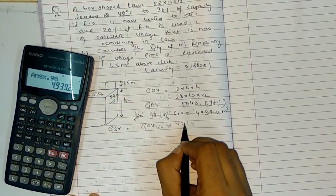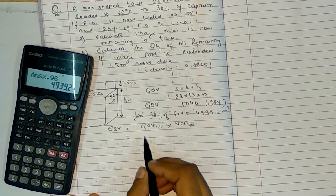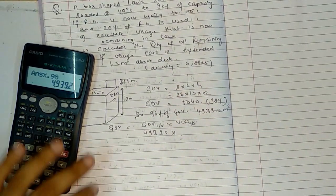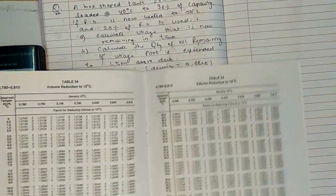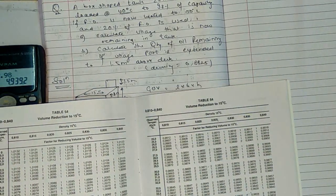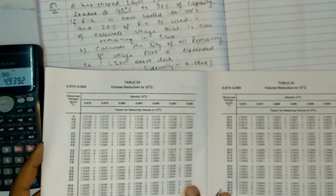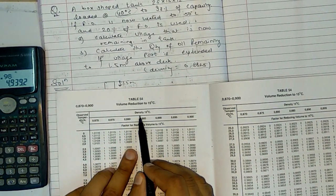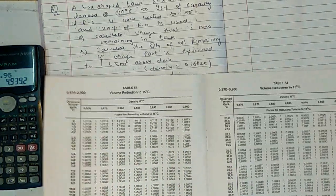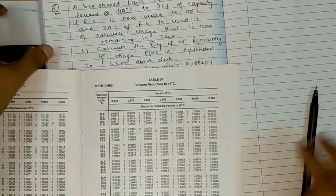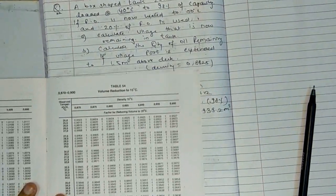GOV is 4939.2 multiplied by VCF at 40 degrees. To find VCF, we look up ASTM table 54 according to density 0.8825 at 40 degrees Celsius, and we interpolate. At density 0.880 and 40°C, VCF is 0.9811. At density 0.885 and 40°C, VCF is 0.9813. Now we calculate VCF at 0.8825.